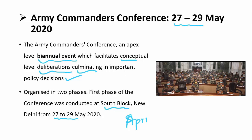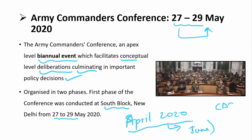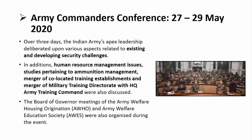The conference was originally scheduled for April 2020 but was postponed due to the lockdown. The first phase was held from 27th to 29th May, and the second phase is expected in June, where the Chief of Defence Staff and the Defence Minister are also expected to address the conference. Over these three days, the Indian Army's apex leadership deliberated on existing and developing security challenges, human resource management, ammunition management, merger of co-located training establishments, and merger of the Military Training Directorate with Headquarters Army Training Command.